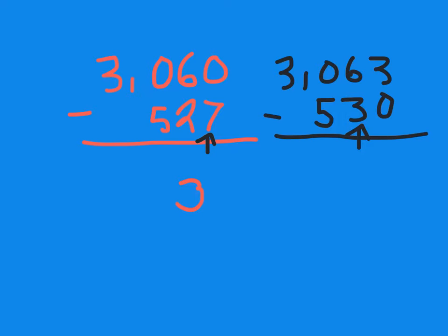1 plus 0 is 1, and I have my 3, so 3,133. And my new bottom number when I add 7 to 530 becomes 600. Now I have an easier subtraction problem to do.